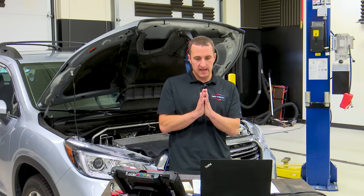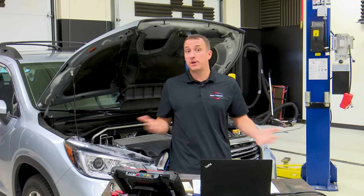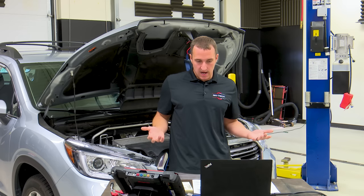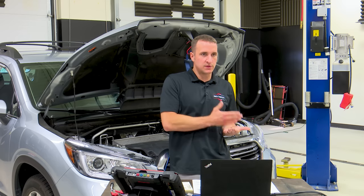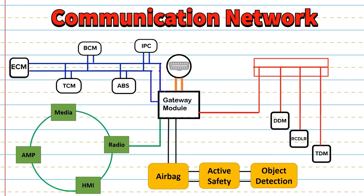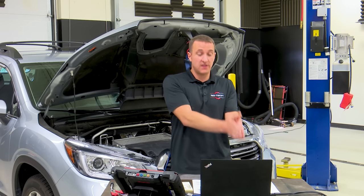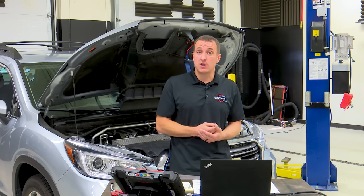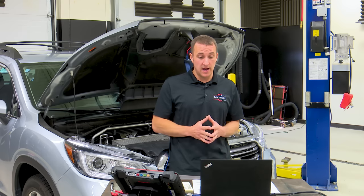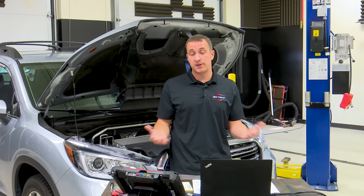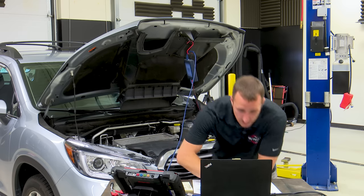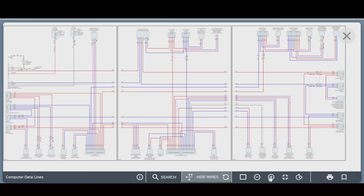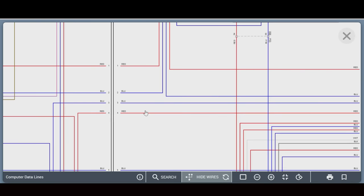If it has a gateway module, all we have to do is find it, because the gateway module is where all the networks go to — that's where we can break it down. And what is one thing that always goes to the gateway module? The DLC. So the first thing I like to do when I get to a network diagram is find the DLC, find what's coming out of the DLC and where it's going, because if there is a gateway module that's where it will go. Let's look at this diagram and see if we can find it.